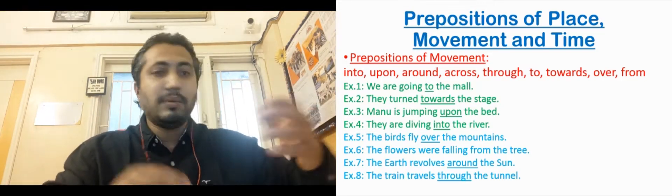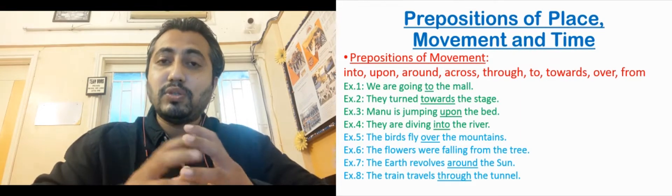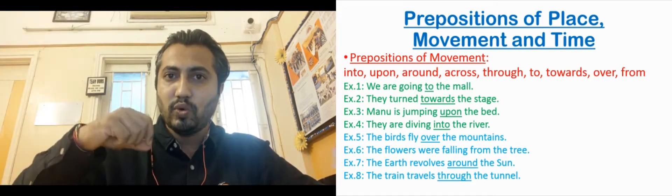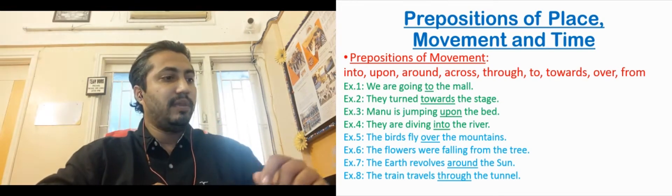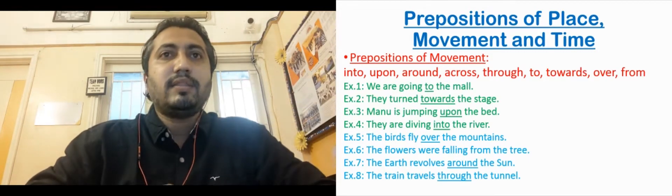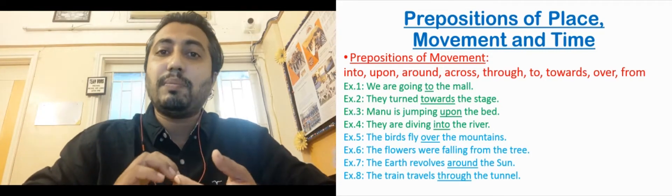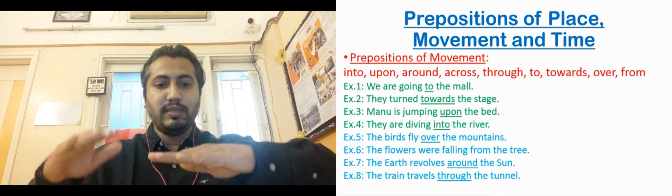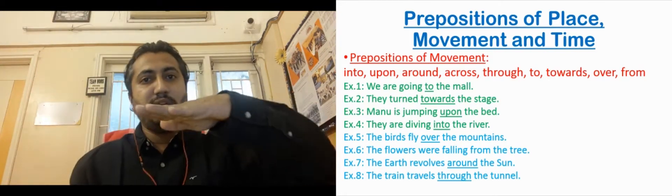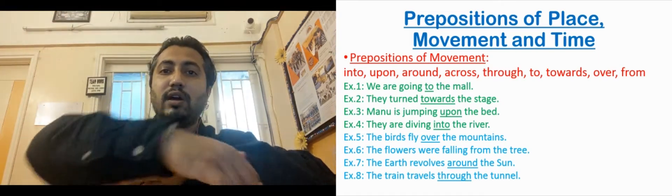Let us quickly go through the examples. 'The book is on the table.' 'The refill is in the pen' — when it is already on or already in. 'The accident took place at the crossroad' — at a specific location. 'The camp was set up by the river' — by the river means alongside it. 'I am from Kerala' — showing origin. 'The dog sits under the table.' 'Rashit sits between Nitya and Mark' — between two people.